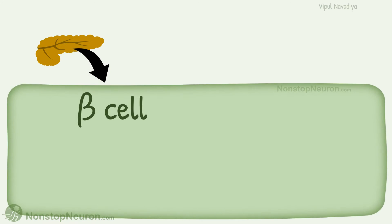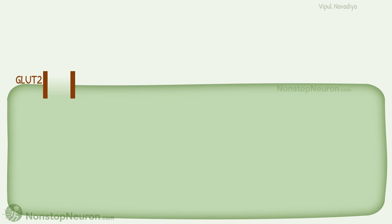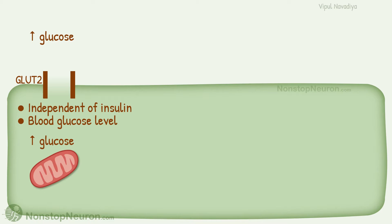Insulin is secreted from beta cells of the pancreas. Before we understand secretion, let's quickly see what the situation is in the cell under its resting condition. These cells have glucose transporter 2 (GLUT2). Transport of glucose by GLUT2 is independent of insulin. Rather, it depends on blood glucose level. The higher the blood glucose, the more the glucose enters the cell. We also have mitochondria and other components involved in glucose metabolism.